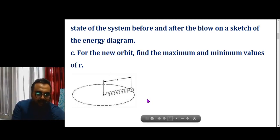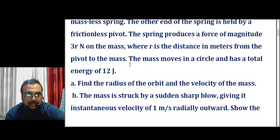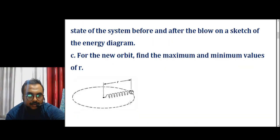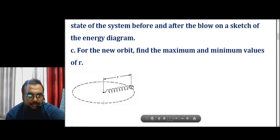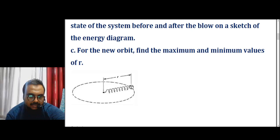One end of the spring is connected to a mass and the other end is pivoted at the center point. The spring has a spring constant, a force is acting due to the spring force, and this mass is moving in a circle, having a velocity in the tangential direction. Due to this radial force it moves in a circle.